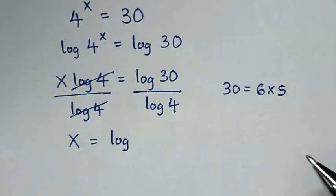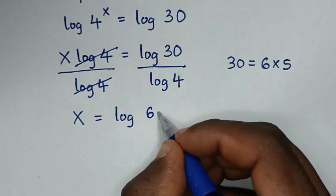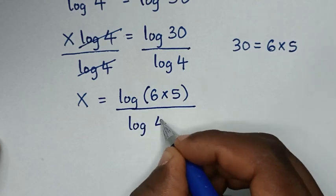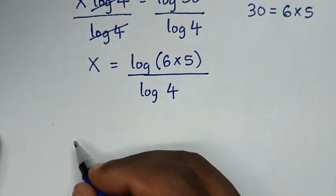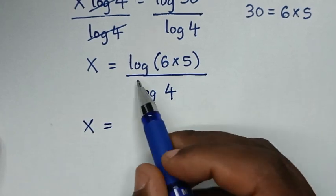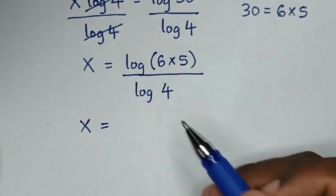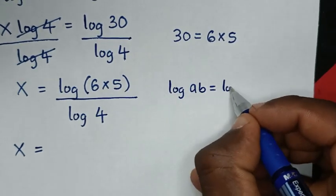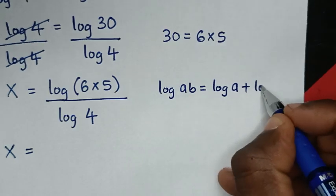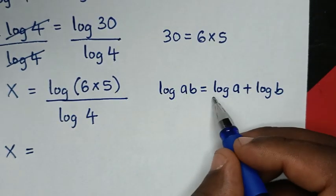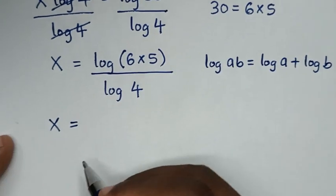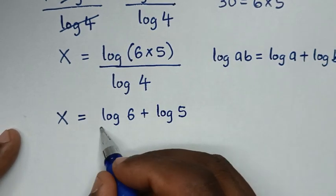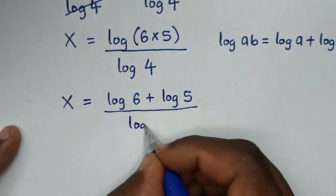Now 30 is the same as 6 times 5, so log of 30 is the same as log of 6 times 5, all over log of 4. Then log of 6 times 5 is in the form of log(a·b), which equals log(a) plus log(b). So log of 6 times 5 becomes log of 6 plus log of 5, over log of 4.